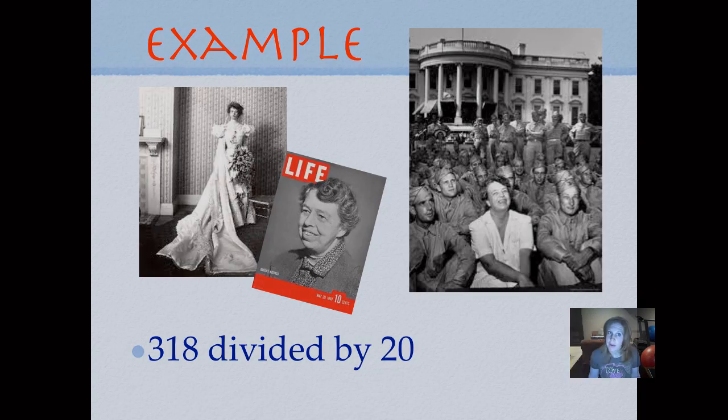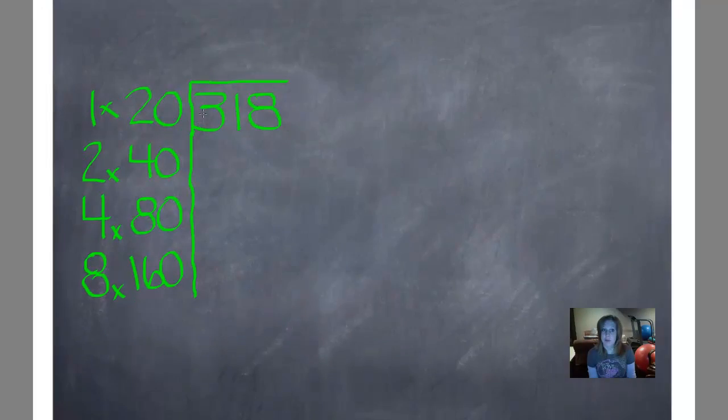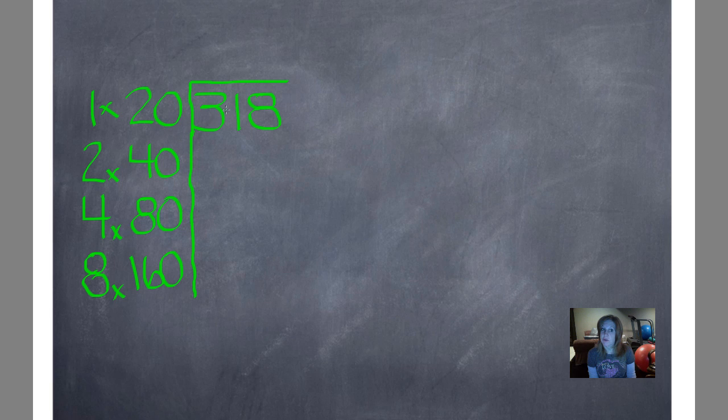318 divided by 20. So I went ahead and wrote our problem in the house, 318 divided by 20, and just like when we did single-digit doubles division, I went ahead and doubled the numbers down the side. 1 plus 1 is 2, 2 plus 2 is 4, 4 plus 4 is 8, and then I went ahead and doubled the divisor. So 20 plus 20 is 40, 40 plus 40 is 80, 80 plus 80 is 160.